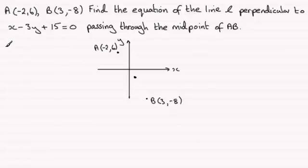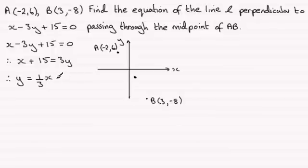So if we do that we've got x - 3y + 15 = 0. And if I add 3y to both sides we just end up with x + 15 = 3y. Now if I divide both sides by 3 and reverse it round I therefore have y = (1/3)x + 5.